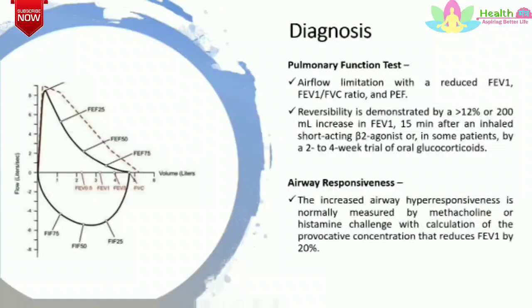Diagnosis. First, pulmonary function test. There will be airflow limitation with reduced FEV1 to FVC ratio and reduction in peak expiratory flow rate. Reversibility is demonstrated by greater than 12% or 200 ml increase in FEV1 at 15 minutes after an inhaled short-acting beta-2 agonist, or in some patients by a 2 to 4 week trial of oral corticosteroids. Airway hyperresponsiveness can be measured by methacholine or histamine challenge, calculating the provocative concentration that reduces FEV1 by 20%.